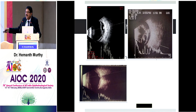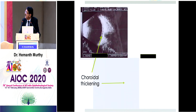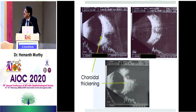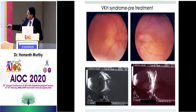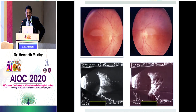In VKH and sympathetic ophthalmia, choroidal thickening is predominantly at the posterior pole and disappears after treatment. You will see choroidal thickening very typically at the posterior pole while the periphery appears normal. This is what you would see in a VKH patient: there is hyperemia with exudative detachments in multiple pockets and irregular thickening predominantly in the posterior pole. After treatment with steroids and immunosuppression, these findings resolve.